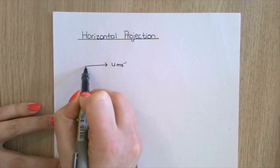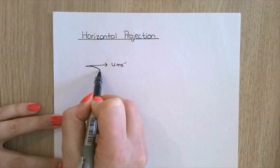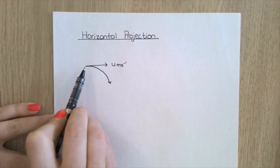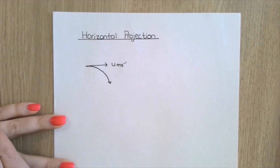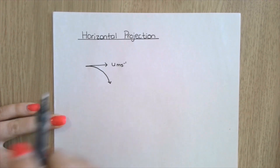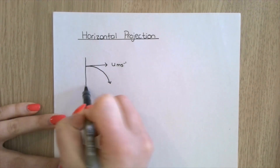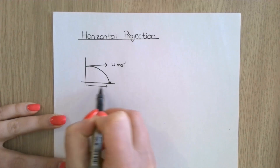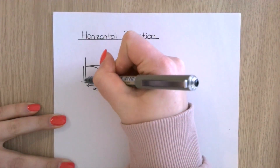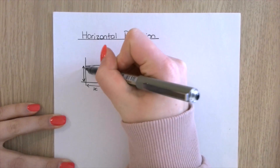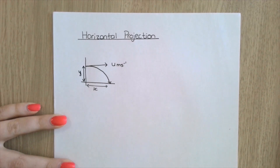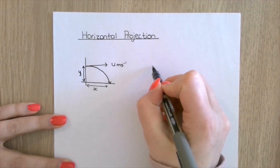Naturally what happens is it will go horizontally but will start to curve and fall under gravity. We have an x distance and a y distance from where it started.